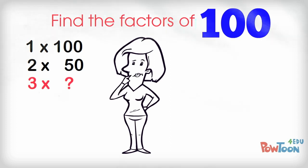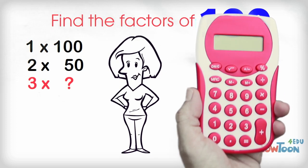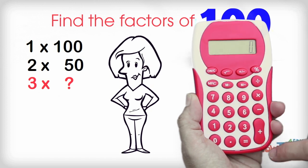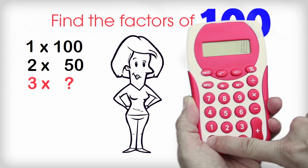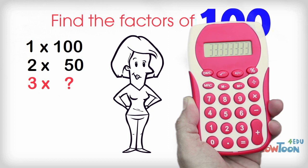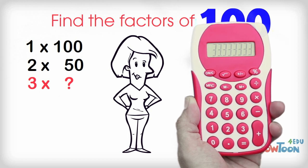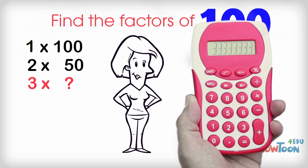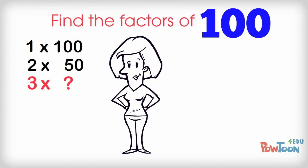Is 3 a factor? We can use a calculator to check very quickly if you don't know. 100 divided by 3 gives us a decimal in the answer. That's a remainder. It doesn't divide evenly, so 3 is not a factor.